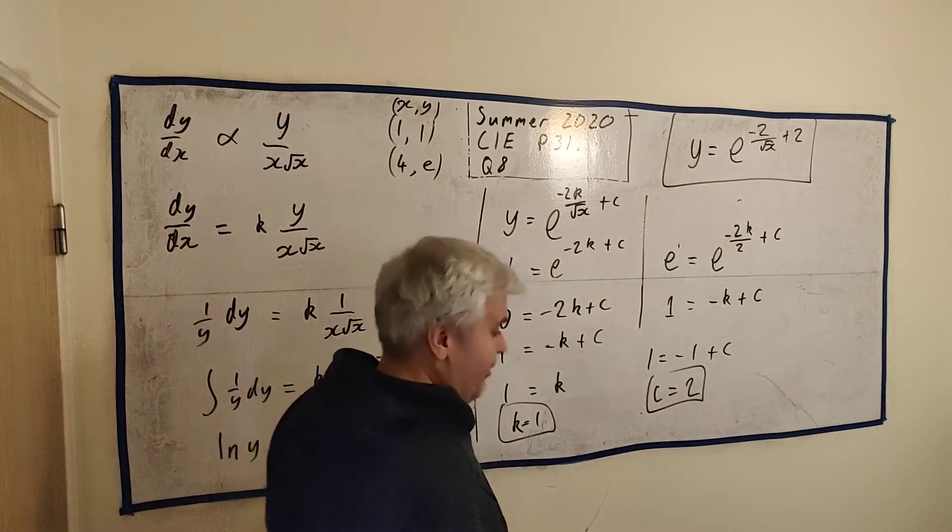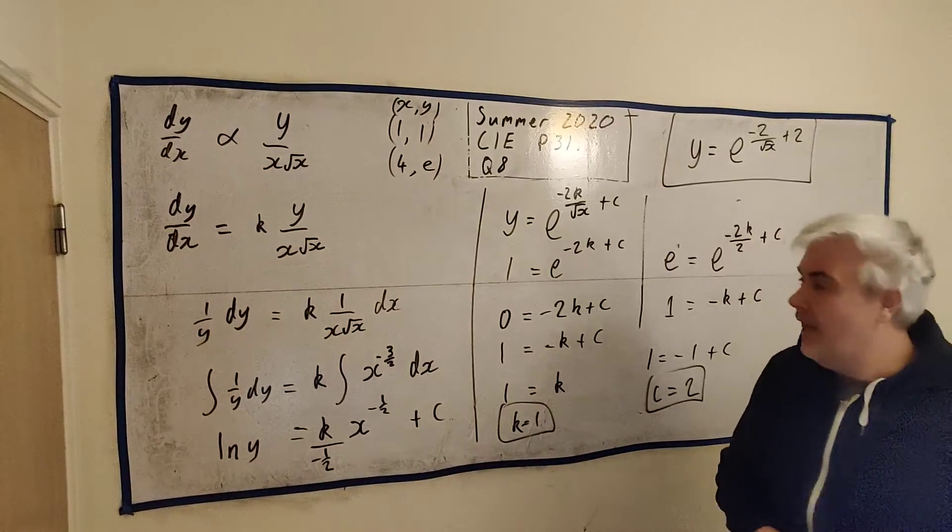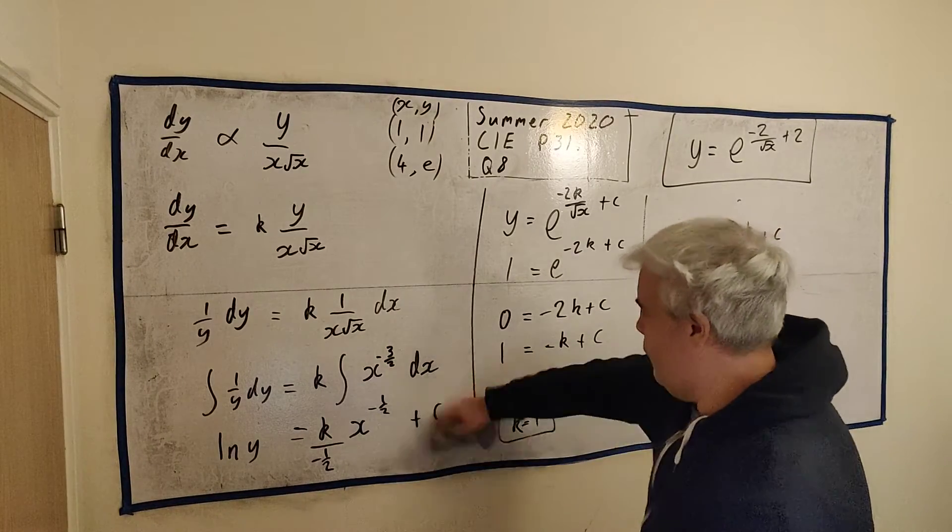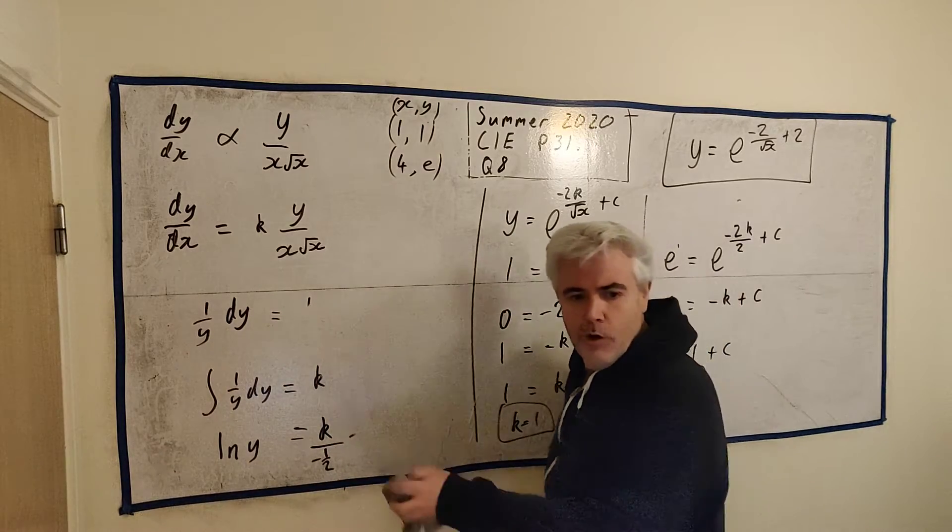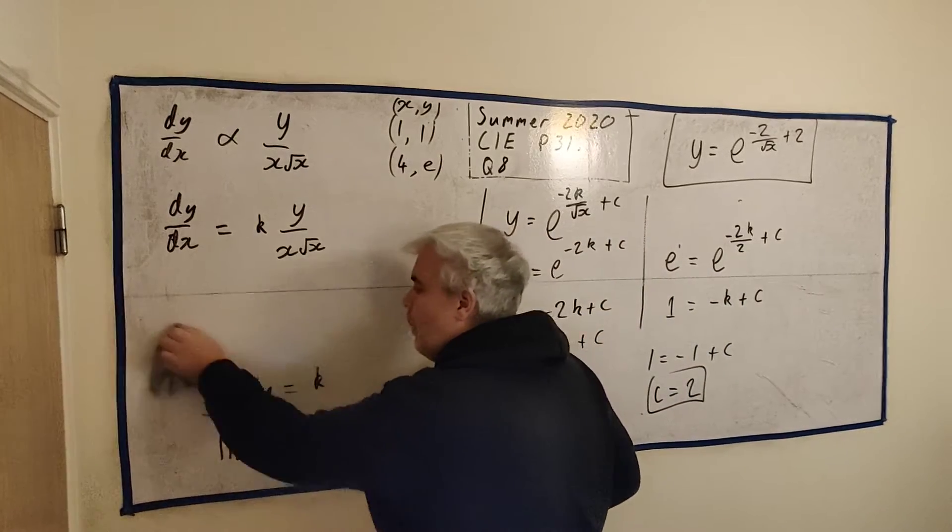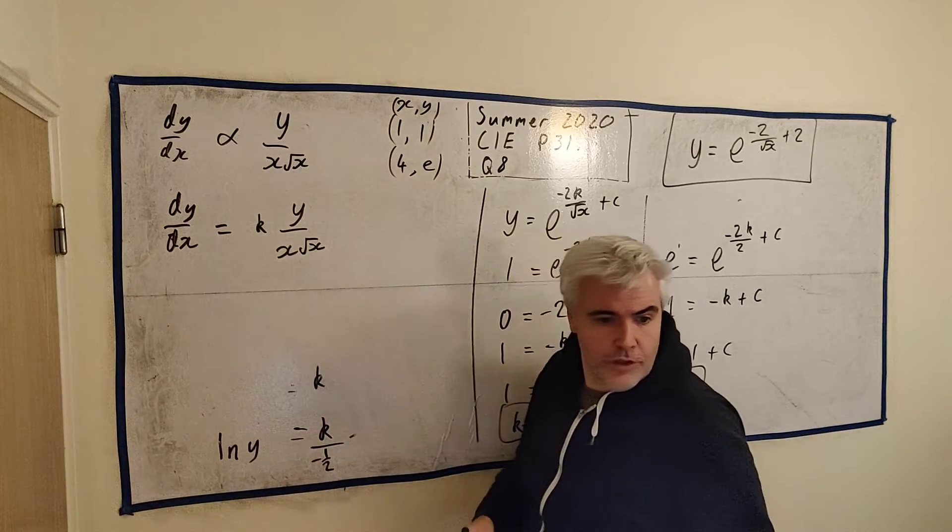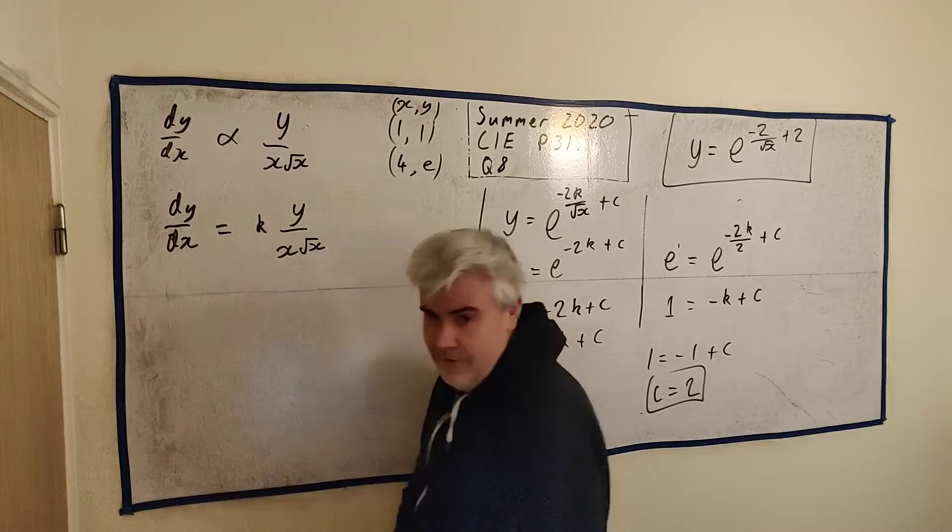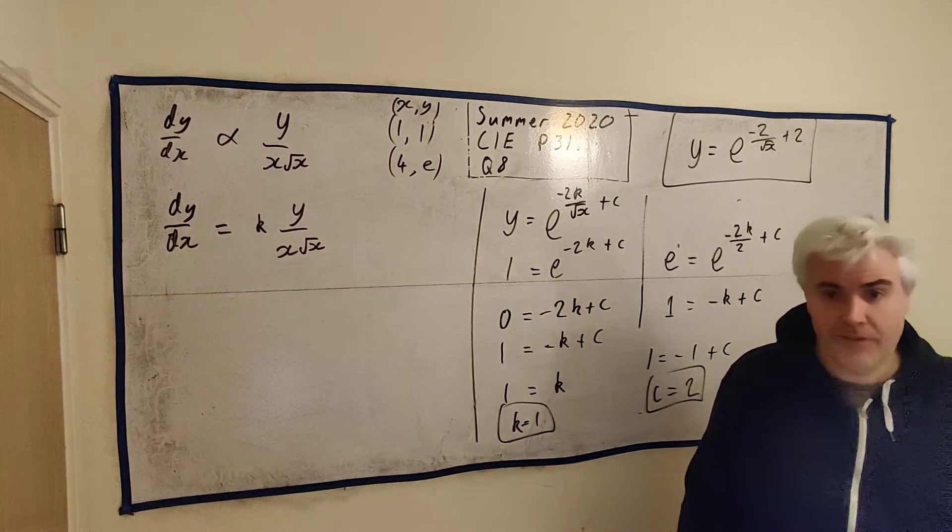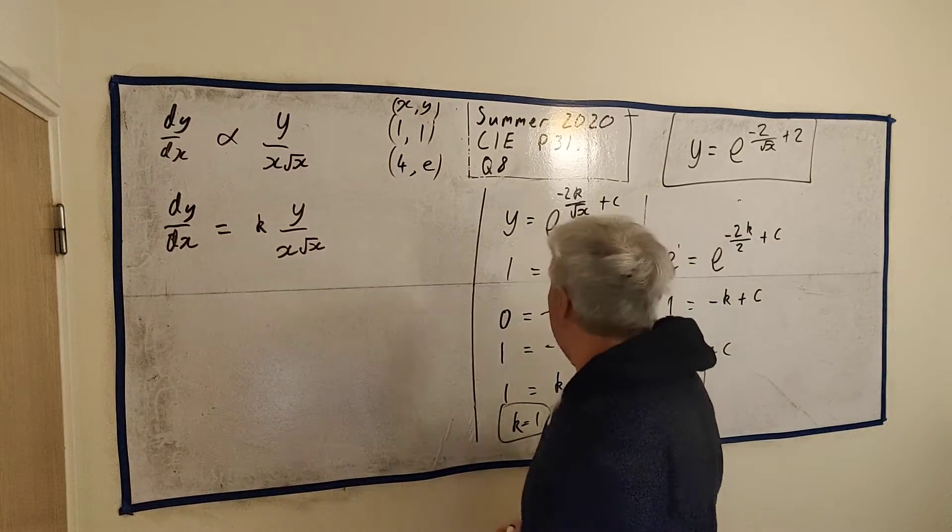But, so many students got this wrong. So, this was a low-scoring question in the exam. So, that's part A. For part B, let me just make a little bit of room. And I'll explain part B. So, part B asks us, describe what will happen to y when x tends towards infinity. Okay. So, there's only one mark for this. So, you're not meant to do lots of maths or anything. So, just bear that in mind.